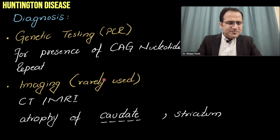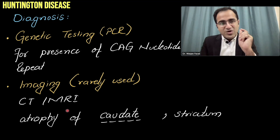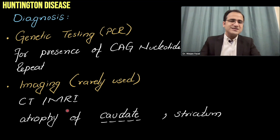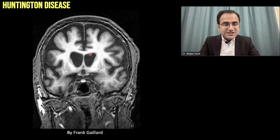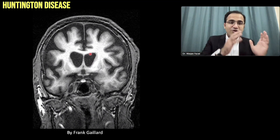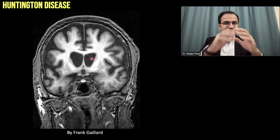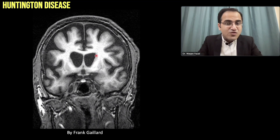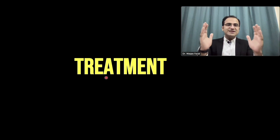Imaging is rarely needed but done to rule out other pathologies. CT and MRI show atrophy of basal ganglia structures, especially caudate atrophy — the classical imaging feature. Because the caudate sits adjacent to the ventricles, caudate atrophy leads to enlargement of the ventricles, visible on coronal MRI sections.